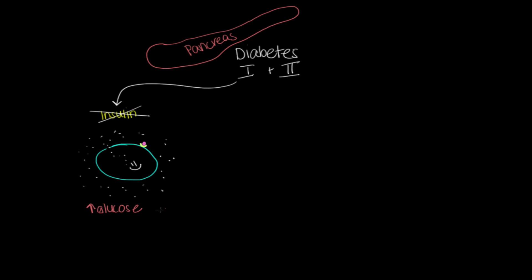So what is this person going to need? Because they don't make insulin, they're going to have to be insulin dependent, meaning they're going to require insulin for their lifetime to act as this receptor, to open up the cell to receive the glucose so it's not floating around everywhere.